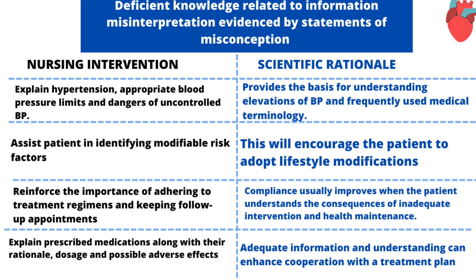Next, assist the patient in identifying modifiable risk factors. The rationale is that once the patient knows that certain risk factors can be modified to prevent increased blood pressure or complications of hypertension, they will be encouraged to adopt necessary lifestyle modifications. The next intervention is to reinforce the importance of adhering to the treatment regimen and coming for follow-up appointments. The rationale is that patients who understand the consequences of non-compliance are more likely to comply with treatment and follow-up.